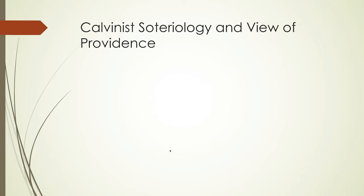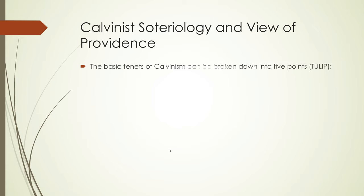Perhaps the most important aspect of Puritan ideology is Calvinist soteriology, which we could call the doctrine of salvation, and a Calvinist view of providence — his view of the protective care of God. Named after John Calvin, it's possible to break this system of beliefs down into five points: total depravity, unconditional election, limited atonement, irresistible grace, and the perseverance of the saints, or TULIP for short.